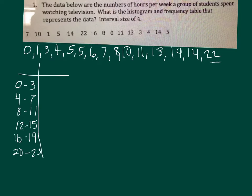And you go until your last number is in one of those intervals. So that's how you make your intervals. Start with your smallest number, go until your last number is in there. And it will tell you always what's your interval size.